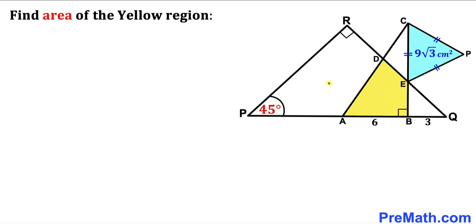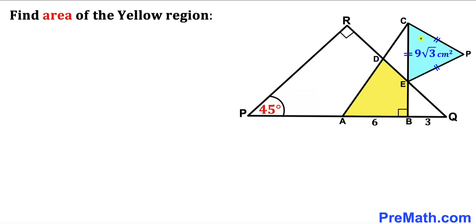In this video we have two right triangles PQR and ABC put together, resulting in the yellow shaded region shown in the diagram. Angle QPR is 45 degrees, line segment AB is 6 centimeters, and line segment BQ is 3 centimeters. We also have an equilateral triangle CEP whose area is 9 times square root of 3 centimeters squared. Our task is to calculate the area of the yellow shaded region.